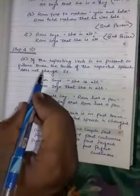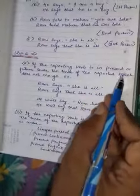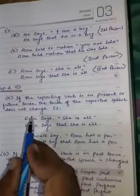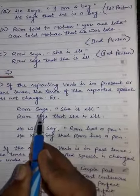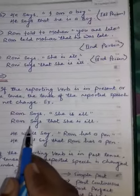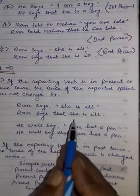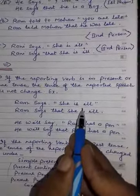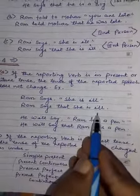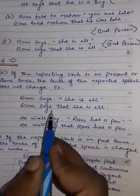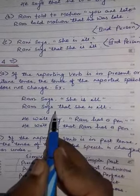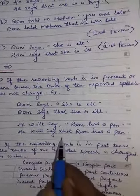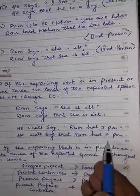Step 4: If the reporting verb is in present or future tense, the tense of the Reported Speech does not change. For example: 'Ram says she is ill' — this is present tense, so it becomes 'Ram says that she is ill.' We only add 'that' after the comma and the rest stays the same. For future tense: 'Ram will say that Ram has a pain' — again no change in the reported speech tense.